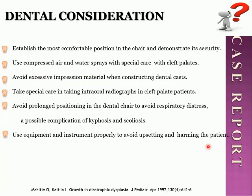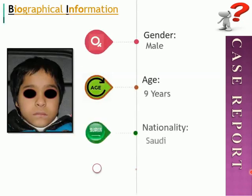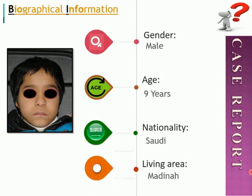Use equipment and instruments properly to avoid upsetting this type of patient. Regarding anesthesia, patients with Diastrophic Dysplasia are prone to severe kyphoscoliosis, which makes breathing difficult and may lead to long-term lung problems. An unstable neck means that general anesthesia is potentially a high-risk procedure in these patients. This provides a hint and introduction regarding the syndrome for our case presentation.